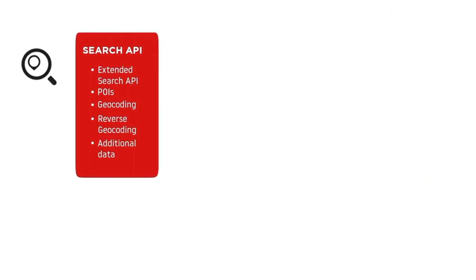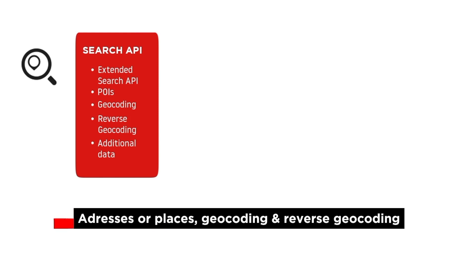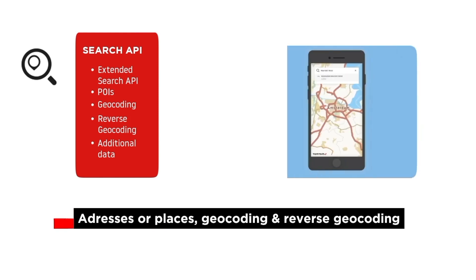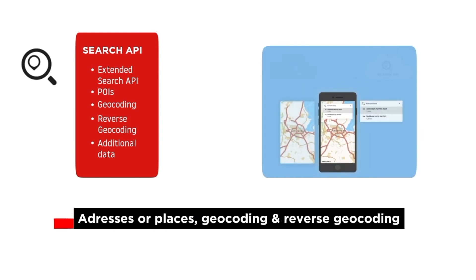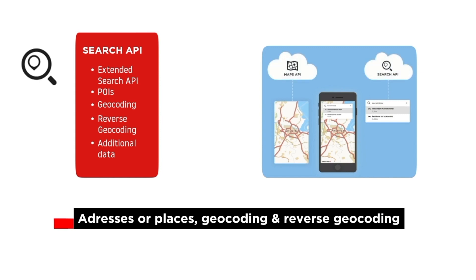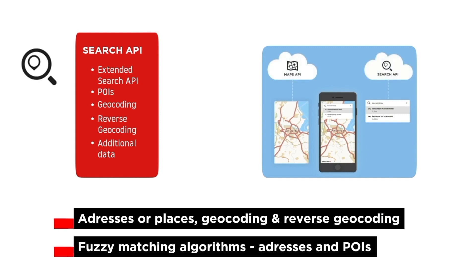The Search API enables reverse and forward geocoding, searching for an address or a place either in an area or around a created route. And with auto-completion support, it provides an excellent query interface for interacting directly with your users.